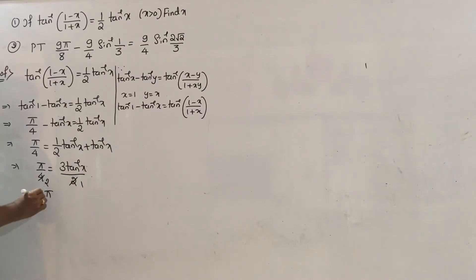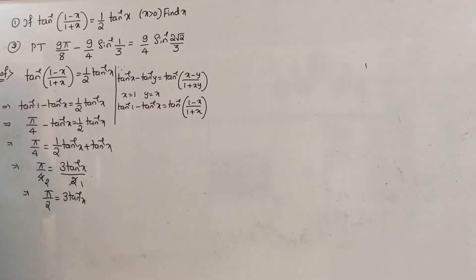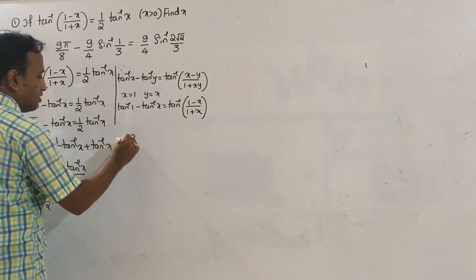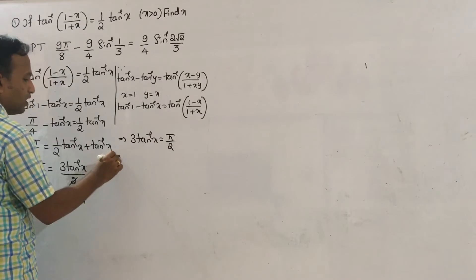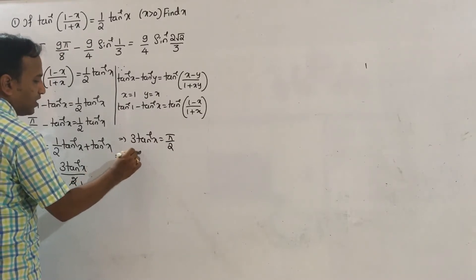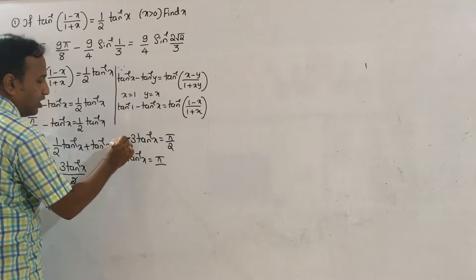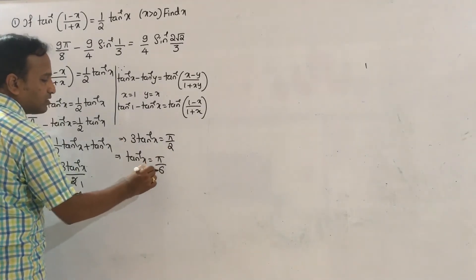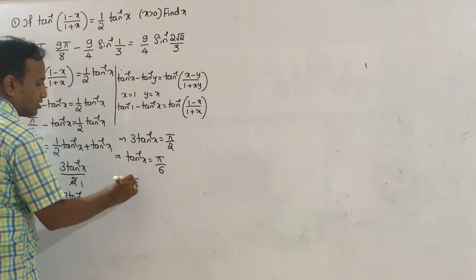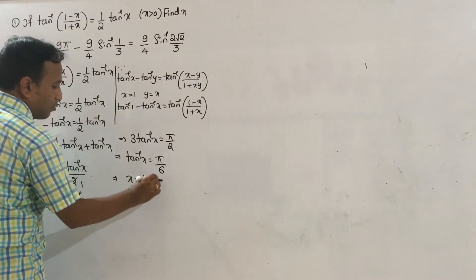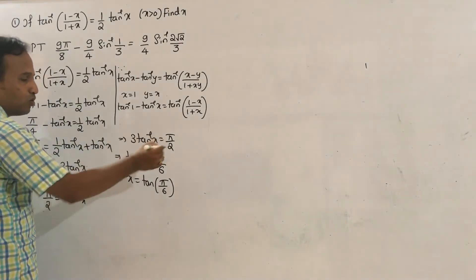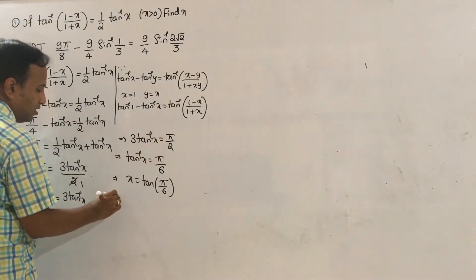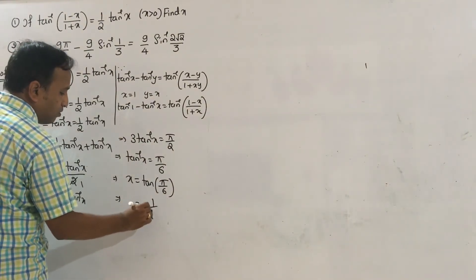Therefore pi by 2 equals 3 tan inverse x, so tan inverse x equals pi by 6. Therefore x equals tan of pi by 6, which gives x equal to 1 by root 3.